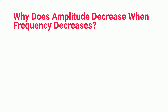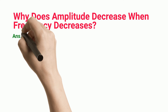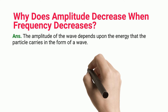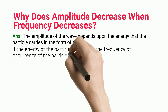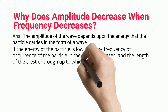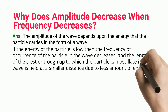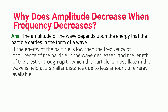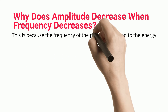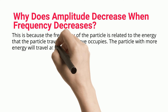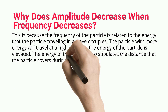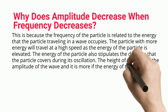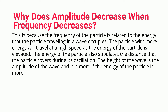Why does amplitude decrease when frequency decreases? The amplitude of the wave depends upon the energy that the particle carries in the form of a wave. If the energy of the particle is low then the frequency of occurrence of the particle in the wave decreases, and the length of the crest or trough up to which the particle can oscillate is held at a smaller distance due to less energy available. The particle with more energy will travel at a high speed, and the energy also stipulates the distance covered during oscillation. The height of the wave is the amplitude, and it is more if the energy of the particle is more.